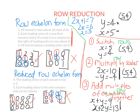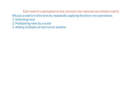Reduced row echelon form matrices are much easier to work with than even row echelon form matrices. Each matrix is equivalent to one and only one reduced row echelon matrix, meaning when you start with any matrix there's only one possible answer. To get there, you start with your matrix and keep applying the three row operations — switching rows, multiplying by a scalar, or adding multiples of rows — one after the other.